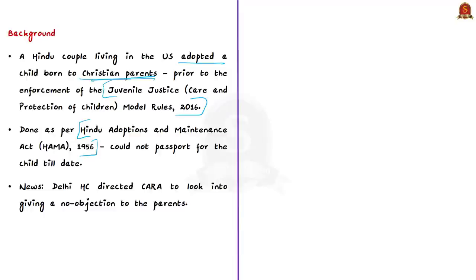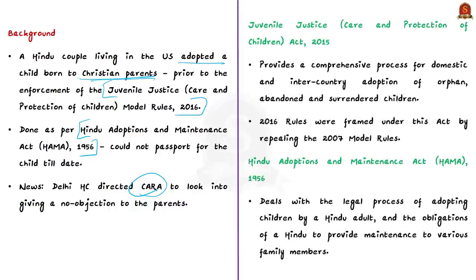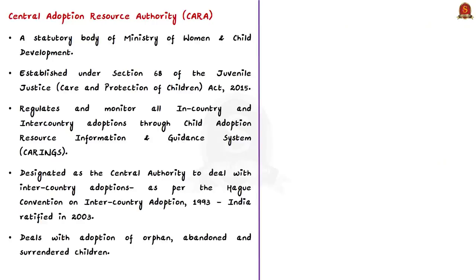The Delhi High Court has directed the central authority to look into giving a no-objection to the parents for obtaining the passport. The Juvenile Justice Care and Protection of Children Act of 2015 provides for a comprehensive process for domestic and inter-country adoption of orphaned, abandoned, and surrendered children. The 2016 rules were framed under this act, repealing the 2007 model rules. The Hindu Adoptions and Maintenance Act of 1956 deals with the legal process of adopting children by a Hindu adult.